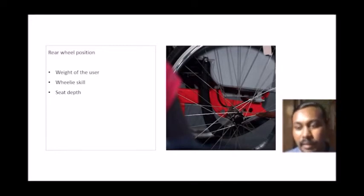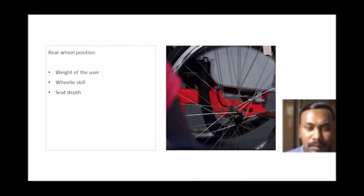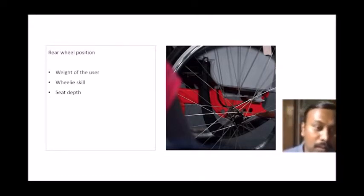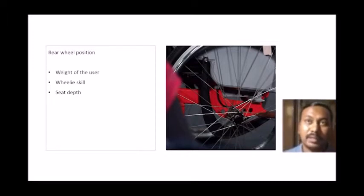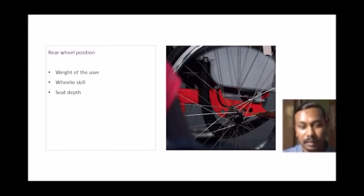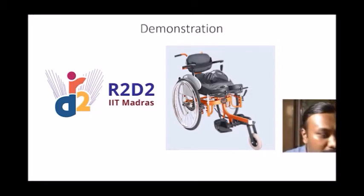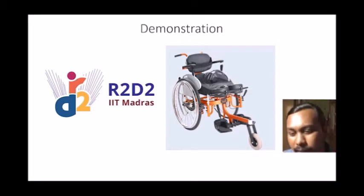The rear wheel position has multiple holes with three settings — active, moderate, or passive — depending on weight, wheelie skill, terrain, and seat depth. When seat depth is adjusted, the backrest actually moves back. The last component is the spring assist, which helps make the standing process easier. After reviewing all these fitting considerations, we will now move to a live demonstration on the wheelchair.